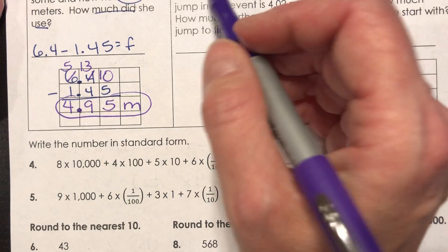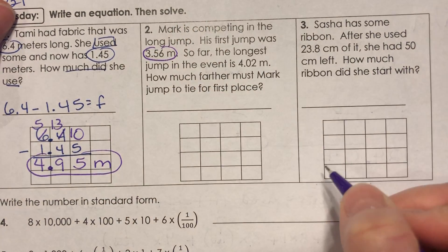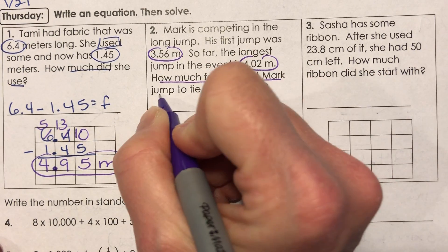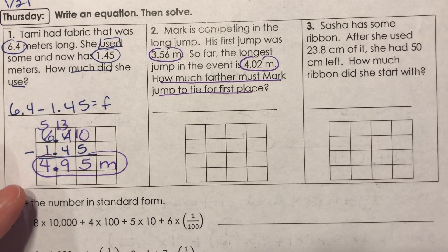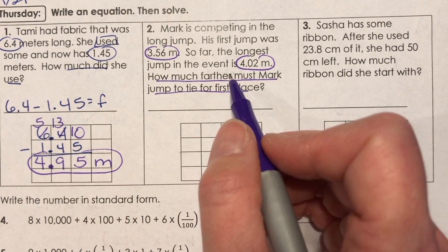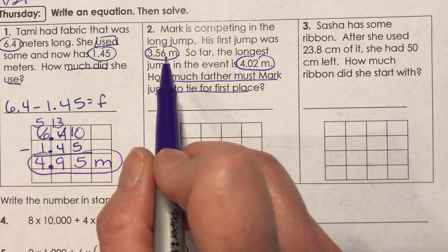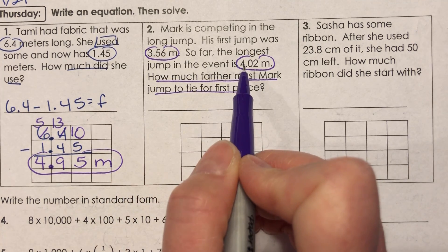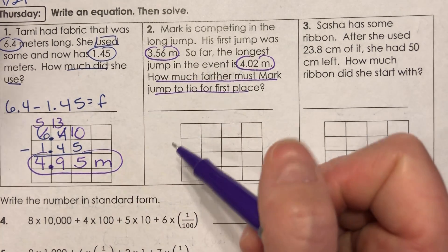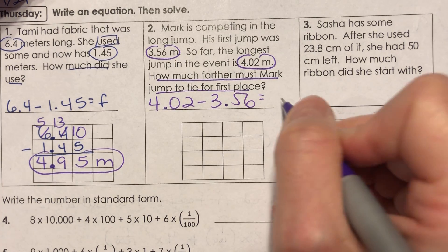Okay, number two. Mark is competing in the long jump. His first jump was 3.56 meters. So far, the longest jump in the event is 4.02 meters. How much farther must Mark jump to tie for first place? So it says that his first jump is 3.56 meters and the longest jump is 4.02. It asks how much farther he has to go to tie. So you could look at this as 3.56 plus what would give you 4.02, but what you'd have to do to figure out what you're adding to that is you'd have to subtract those two values.